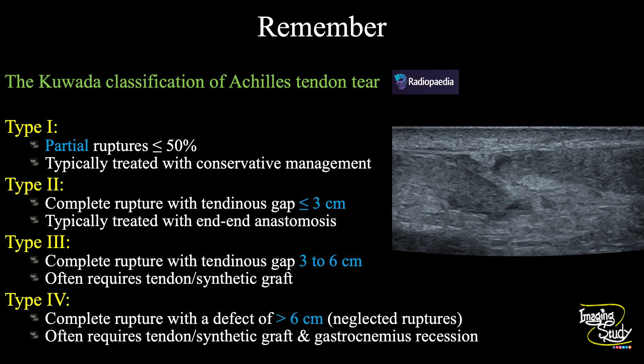The take-home message: we have the CUADA classification of the tendo Achilles tear. There are four types. Type 1 is partial rupture. Types 2 to 4 are complete rupture. If the gap between the two ends is up to 3 centimeters, it is Type 2. More than 3 centimeters is Type 3. More than 6 centimeters is Type 4. Our case is a Type 2 Achilles tendon tear, which can be treated with end-to-end anastomosis.